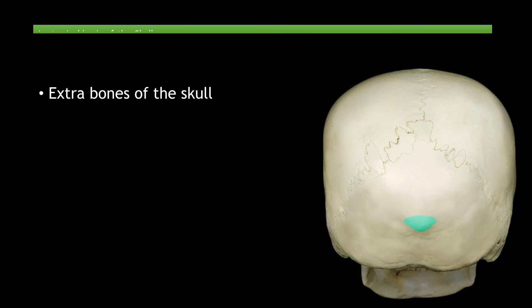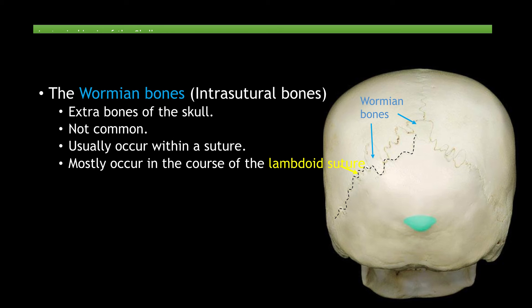Extra bones of the skull: although these bones are not usual, they are not rare. Such bones are called wormian bones, also known as inter-sutural bones or sutural bones, and are extra bone pieces that can occur within a suture, which are the immovable fibrous joints in the skull.